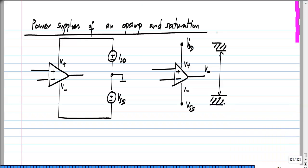Taking some typical values from old general-purpose op amps: V_DD could be 12 volts and minus V_SS could be minus 12 volts. The output could be swinging between, say, 10.5 volts and minus 10.5 volts while still behaving like a voltage-controlled voltage source. For the op amp to behave like a voltage-controlled voltage source, limits have to be placed on the output voltage V_naught, and those limits are set by the supply voltages connected to the op amp.